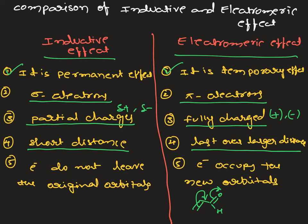In inductive effect, the bonded pair of electrons remains in the original orbitals. But in electromeric effect, the electrons are completely shifted toward one of the atoms and occupy new orbitals. These are the main differences between inductive effect and electromeric effect. Inductive effect is observed in saturated hydrocarbons or any group attached, whereas electromeric effect is seen in unsaturated systems.